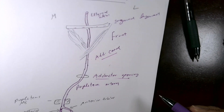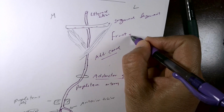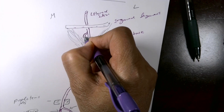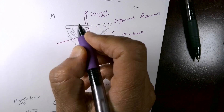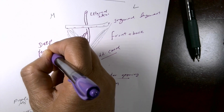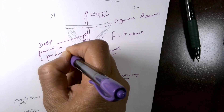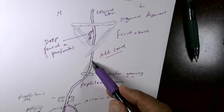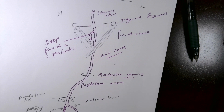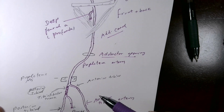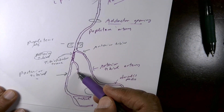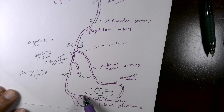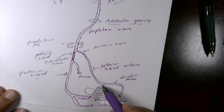The femoral artery supplies both the front and back of the thigh. It supplies the back of the thigh through one major branch called the profunda femoris, or deep femoral artery. The popliteal artery supplies the lower back of the thigh; the anterior tibial supplies the front of the leg; the peroneal supplies the lateral side of the leg; and the posterior tibial supplies the back of the leg and the plantar surface of the foot via the medial and lateral plantar arteries.